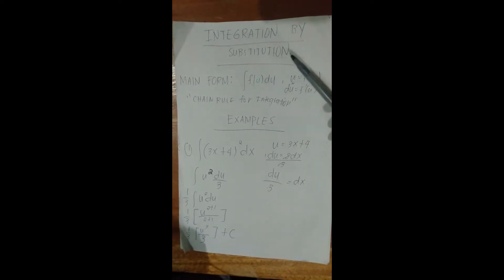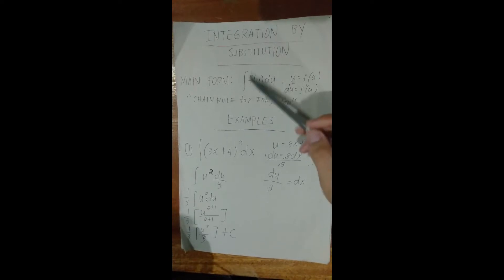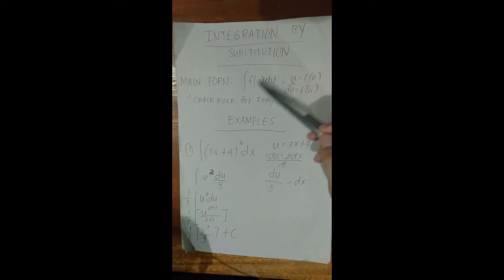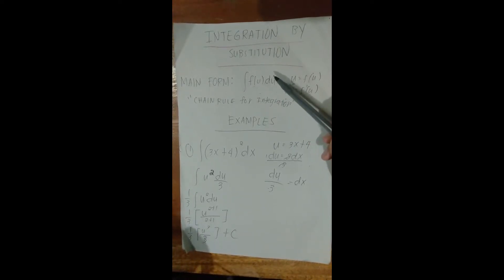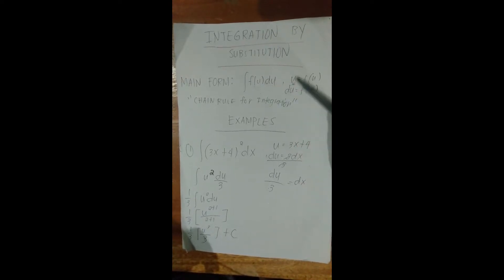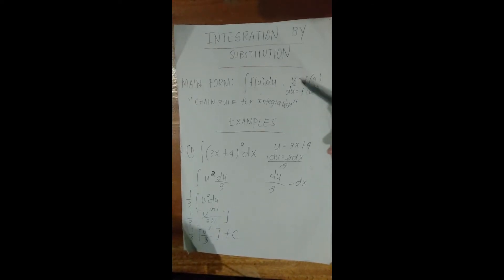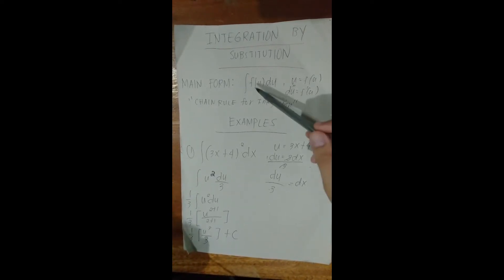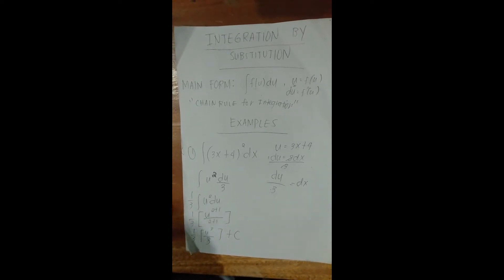In substitution, if you pull out a function from the main function and take its derivative, you'll notice that derivative also appears in the original function. So you set that inner function as your u, take the derivative du, and then replace or substitute it back into the original function — that's why it's called substitution.